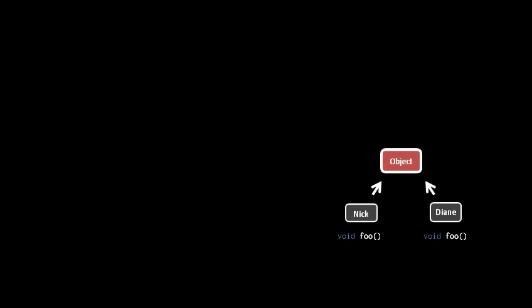Another scenario in which we want to get around the strictures of strict static typing is something like this. Say we have two unrelated classes, Nick and Diane. They're unrelated in the sense that Nick doesn't inherit from Diane and Diane doesn't inherit from Nick, though of course they do have the common ancestor object. And say both of these classes have a method of the same name with the same arguments and the same return type.